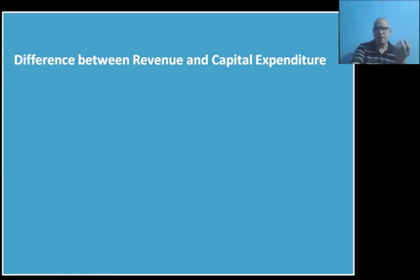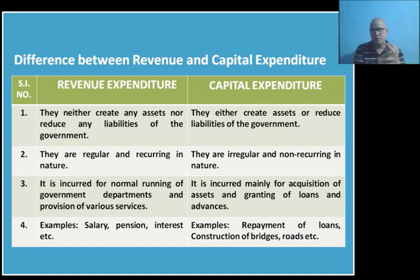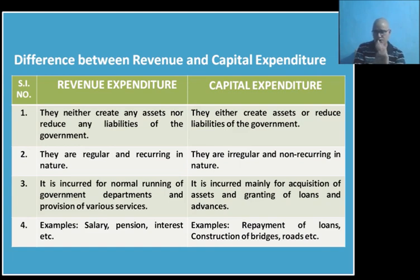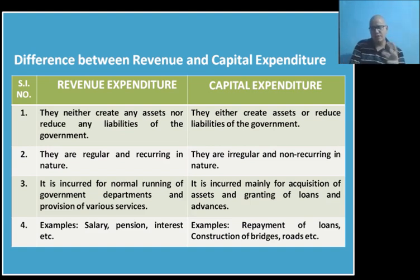Now let us see the difference between revenue and capital expenditure. We have already discussed a few of the differences. This is a very important unit as far as the board exam is concerned — this chapter comprises six marks in your board exam. Most probably you will get either a four-mark or three-mark question, and rest will be one-mark questions. There is very less possibility of getting a six-mark question from this chapter, so the differences may come for three or four marks.